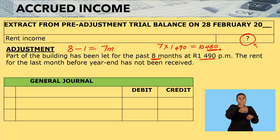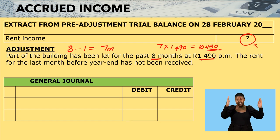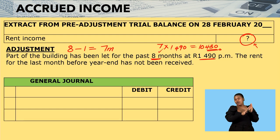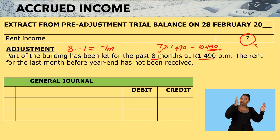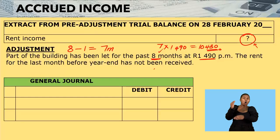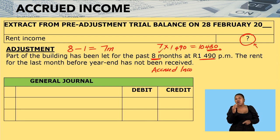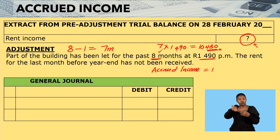Remember, our tenant has been in the building for eight months, but the tenant has only paid us for seven months. That means the tenant now owes us rent for one month. Whenever income has not been paid to us, we call it accrued income. So there is accrued income in this case, and the accrued income is for one month — that is $1,490.